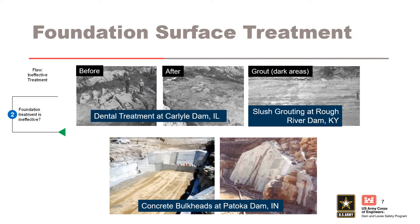Ineffective foundation treatment relates to isolating the embankment from the foundation and its open defects. Node 2 assesses the effectiveness of treatments such as dental concrete, foundation shaping, removal of fractured rock blocks and overhangs, air and hand cleaning, slush grouting, concrete bulkheads, filters at the embankment-foundation interface, etc. Be cautious of the reliance on grouting to serve as the sole design feature to control seepage. This was done at Teton Dam, mentioned during the introduction presentation, which failed during first filling.